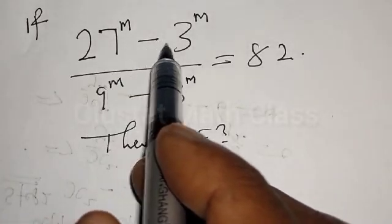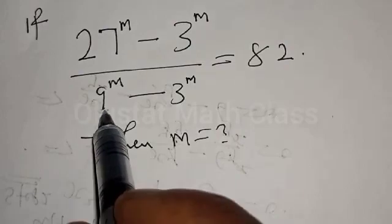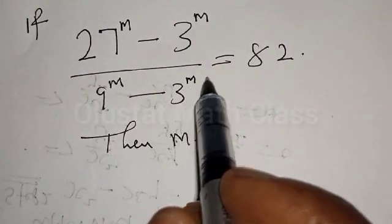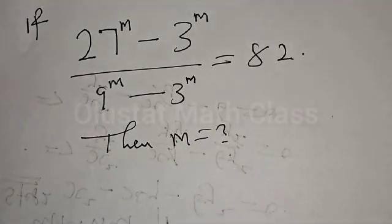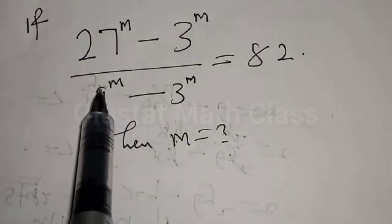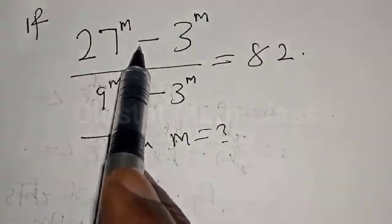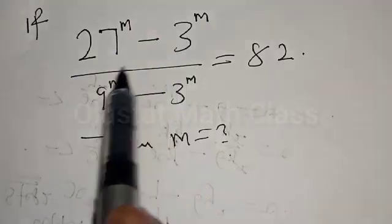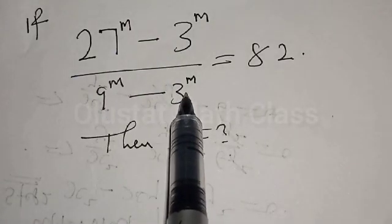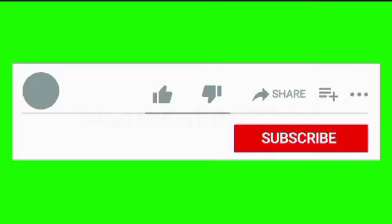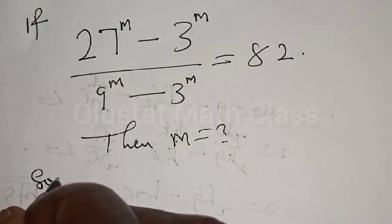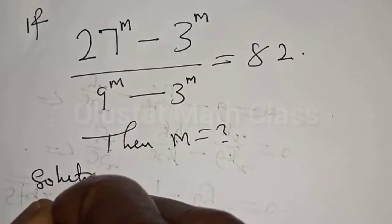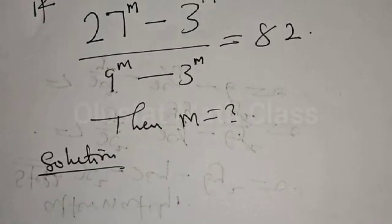If 27 raised to power m minus 3 raised to power m, over 9 raised to power m minus 3 raised to power m, is equal to 82, then m is equal to what? Hi everyone, welcome to my class. In this class we want to find the value of m from this given equation. Before we proceed, please don't forget to like, share, comment and subscribe.